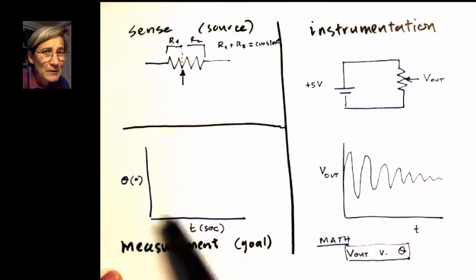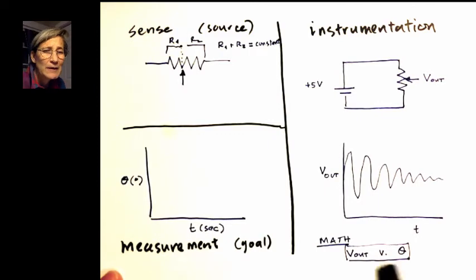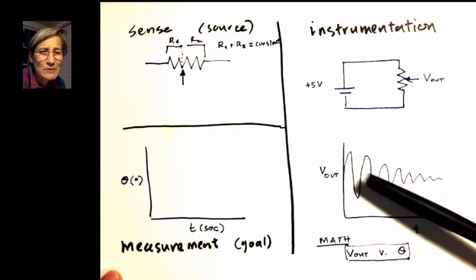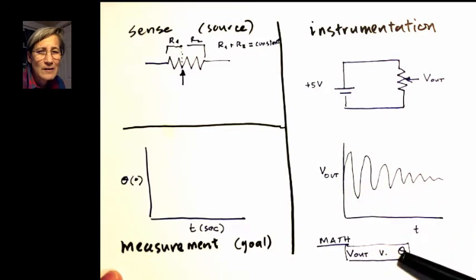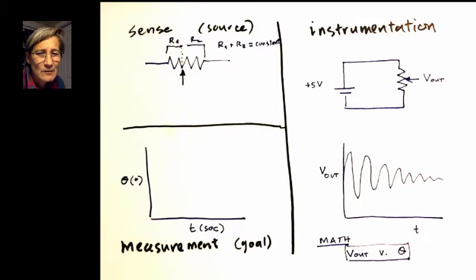Now we're very close to our measurement goal. We want theta versus time. We have V out versus time. And so we need a way to transform that value to what we want. So we use mathematics. We develop a calibration curve of V out versus theta and we substitute for V out theta into the V out value and get theta versus time.